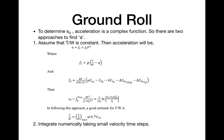Assuming T/W is constant, the acceleration becomes A = F1 + F2 × V², where F1 = G × (T/W − μ) and F2 = G × ρ/(2 × W/S) combined with the drag and lift coefficients. With this, the ground roll distance is Sg = (1/2F2) × ln[(F1 + F2 × VTO²) / F1].